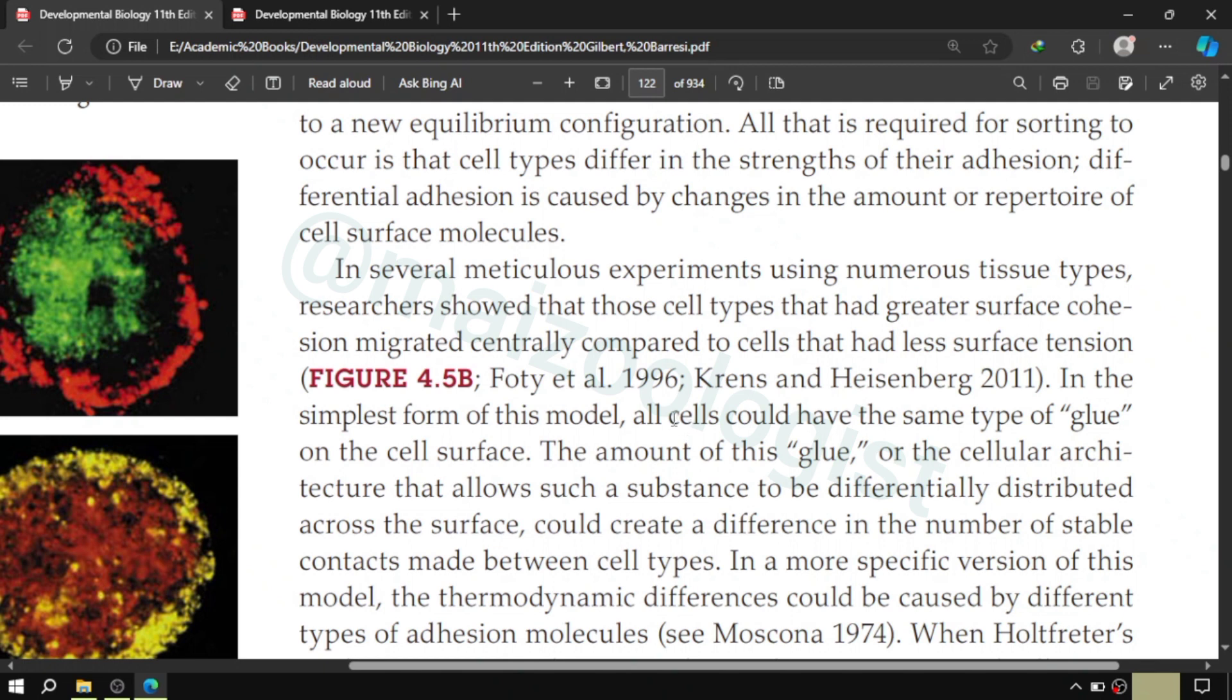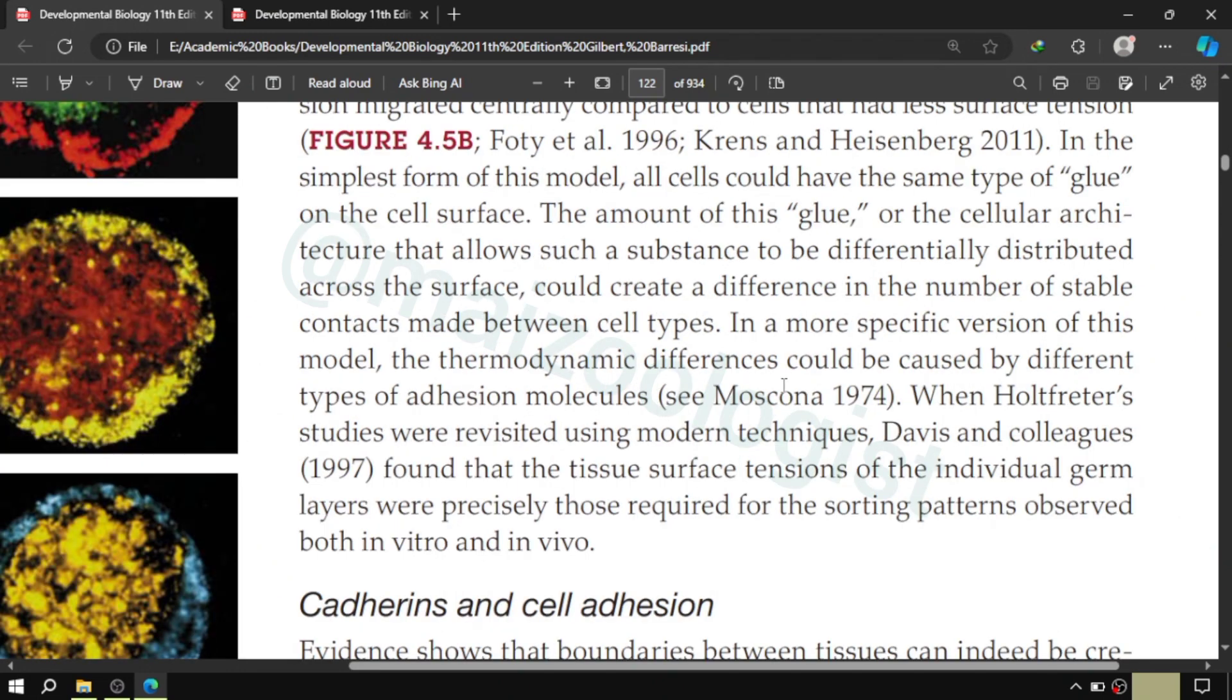And in more specific version of this model, the thermodynamic differences could be caused by different types of adhesion molecules, which we are going to study in the upcoming lectures. So when the studies by Holtfreter were revisited using the modern techniques, Davis and colleagues in 1997 found that the tissue surface tensions of individual germ layers were precisely those that were required for sorting patterns that were observed both in vitro and in vivo.